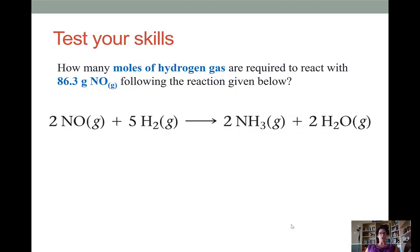Now it's your turn to test the skills you've learned by doing your reading on this unit and watching this video. At the bottom of your notes for today, try out this problem. How many moles of hydrogen gas are required to react with 86.3 grams of nitrogen monoxide following the reaction given below? We have the equation already balanced for you, and this question is a little simpler because it's just asking for moles of hydrogen gas. So lay it out as we did in the previous example, and if you get an answer somewhere around 7 moles, you're doing a great job. Alright, good luck and see you next time.